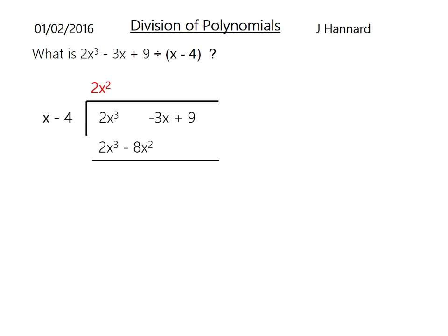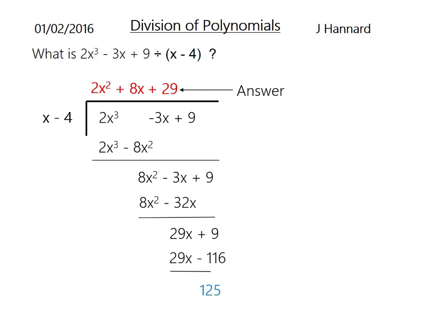We subtract as normal. 2x³ minus 2x³ is 0. You can put 0x² + 0x². But it'll be 0 minus -8x², which is just 0 + 8x², which equals 8x². The -3x and the 9 drop down. We do it again. What do we times x by to get 8x²? 8x times throughout. Careful of double negatives. Subtract down. Then we ask ourselves, what do you times x by to get 29x? 29 times throughout. You get a lovely remainder of 125. There's your answer, there's your remainder.